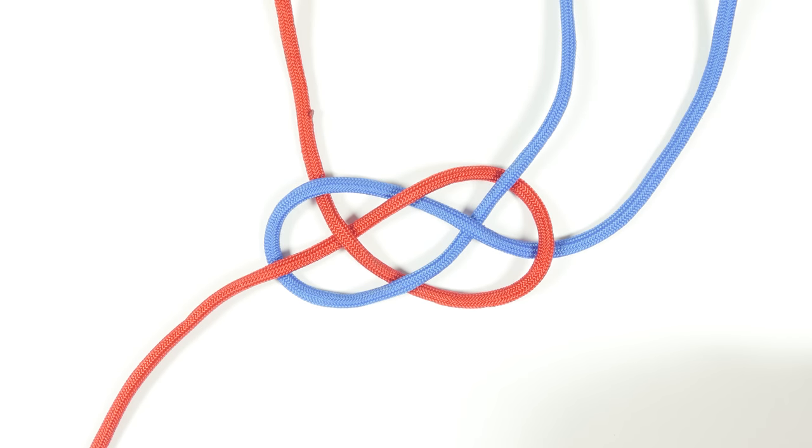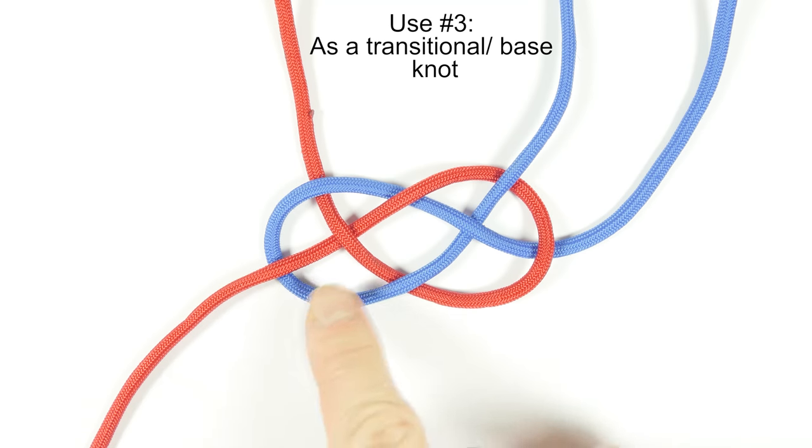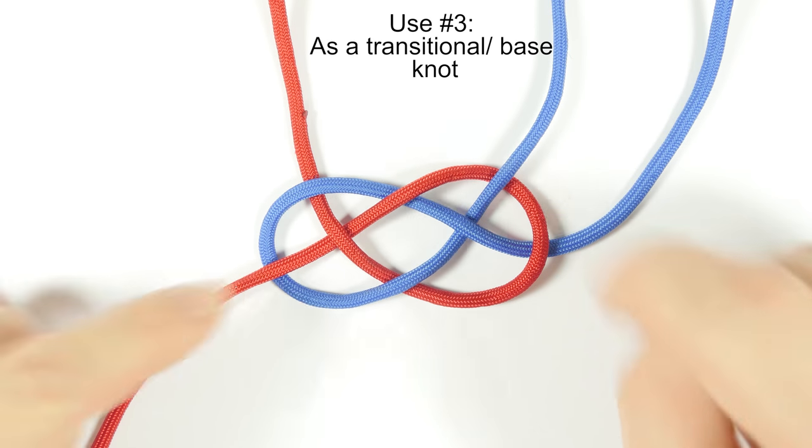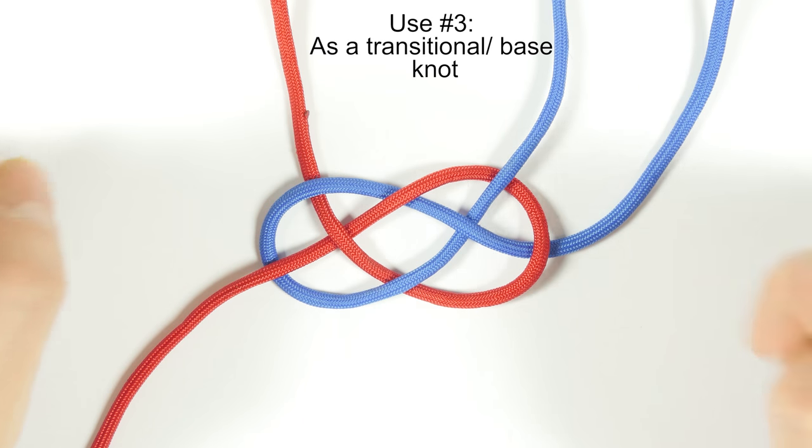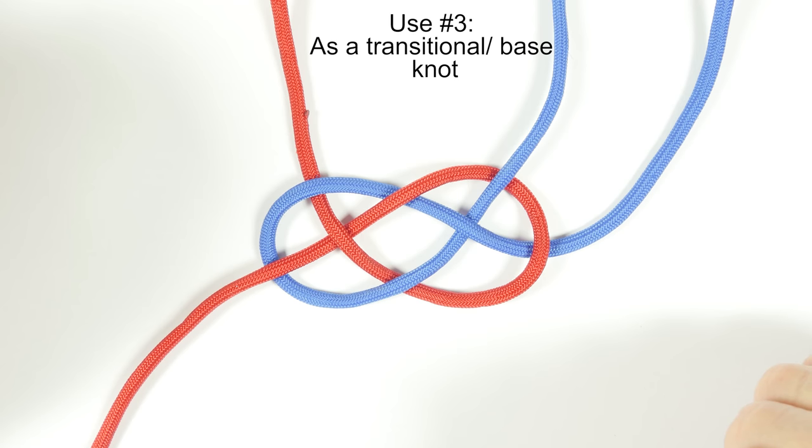Finally, the Carrick Bend is also one of the later steps in tying the Lanyard Knot. So after you tie the Carrick Bend, all you do is you take the two tail ends and you run them past these two strands and through the center to get the Lanyard Knot.